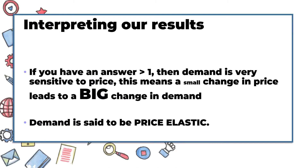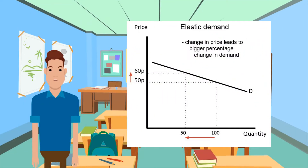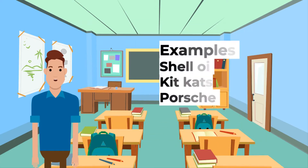When we interpret our results, if we have an answer greater than one, then demand is very sensitive to price. This means a small change in price leads to a big change in demand — this demand is said to be price elastic. In this example of elastic demand, a price rise of 20% leads to a 50% decrease in quantity, giving a PED of 2.5. Examples of these goods are ones that usually have substitutes, such as Shell oil, KitKat chocolate bars, and Porsche sports cars.